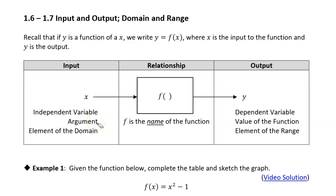Today we're going to talk about the input and output of a function, and also the domain and range of a function. Some of this is a review — we already talked about input and output back on the first day of class when we introduced the concept of a function. If we have a function, y is a function of x, we can write y equals f of x, where x is the input to the function and y is the output.